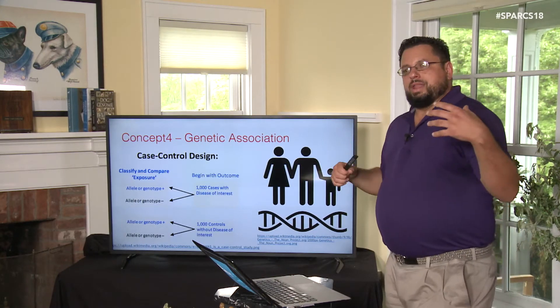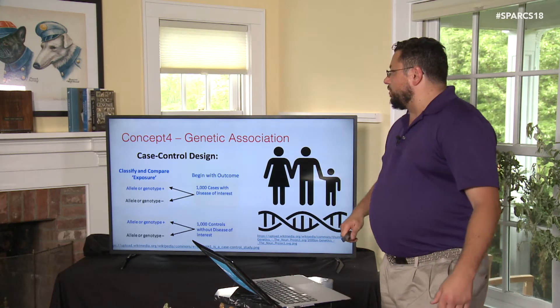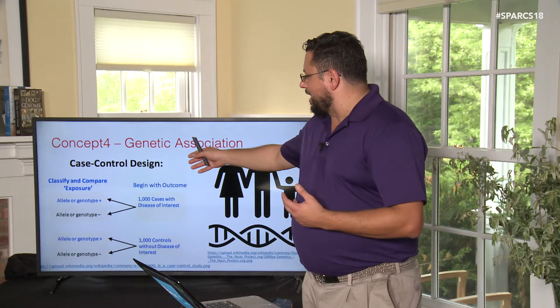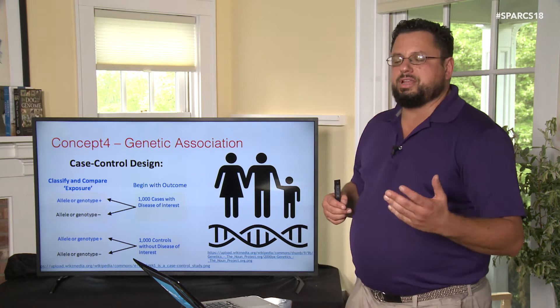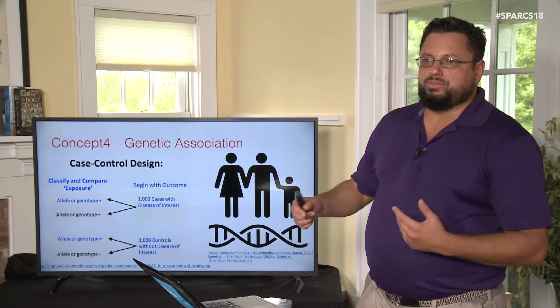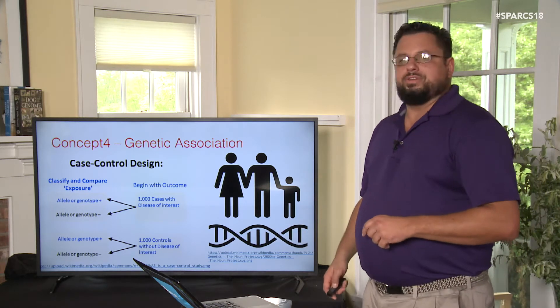In a case-control design, you can take wolves in one context and domestic dogs in another — partitioning them into cases and controls based on whether they have a given trait. Sequencing their genomes to find allelic variation that correlates with the trait is a genetic association study, used a lot in breeds and between breeds to identify genes of interest in the dog genome.